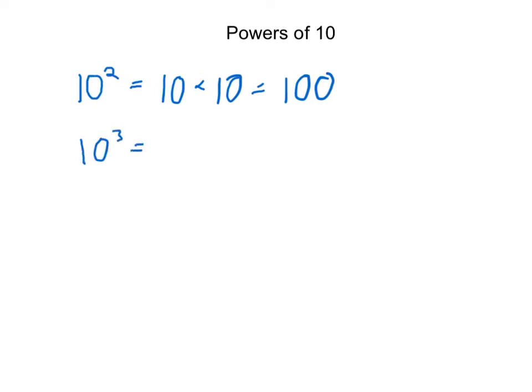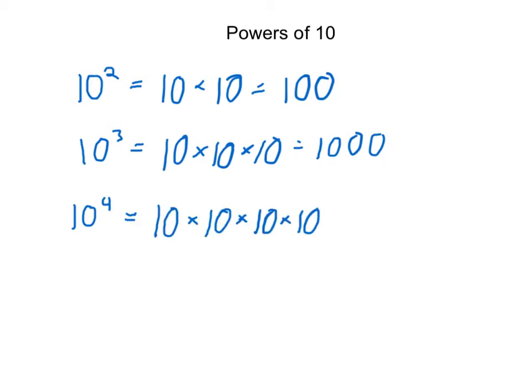10 to the third power, 10 times 10 times 10, in this case 1,000. 10 raised to the fourth power is 10 times 10 times 10 times 10. And if we multiply all that out, we get 10,000.